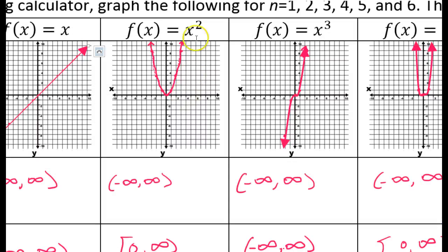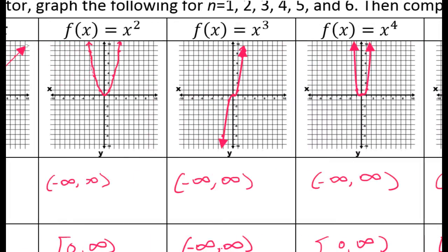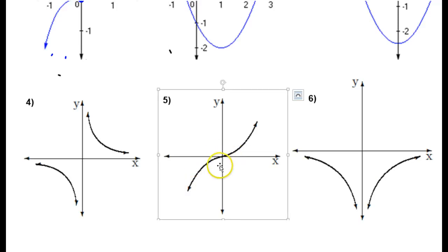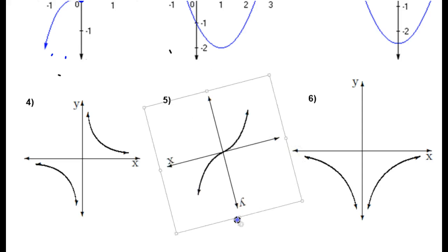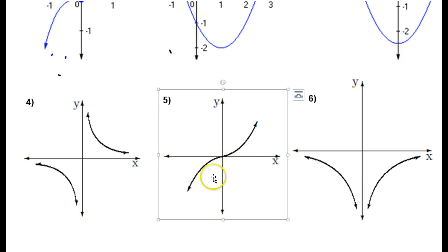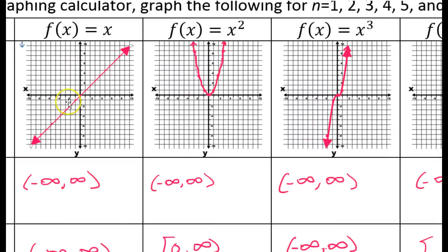As we look across the graphs, notice that the even degree functions all have even symmetry. y equals x squared — the y-axis splits it right down the middle, so that has even symmetry, and all other even degree functions look very similar. Now notice that the odd degree functions all have odd symmetry. Look at x to the third power — if I were to rotate this upside down it still looks the same. So all of the odd degree functions have odd symmetry.